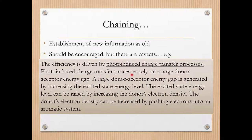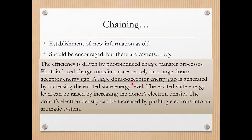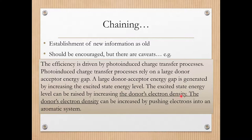And we can actually keep going on and doing this. 'Photo-induced charge transfer processes rely on a large donor-acceptor energy gap.' We can repeat 'a large donor-acceptor energy gap' as the subject of the following sentence: 'A large donor-acceptor energy gap is generated by increasing the excited state energy level.' And the excited state energy level in here can be raised by increasing the donor's electron density. Now we're going to put the object of this sentence into the subject part of the subsequent sentence: 'The donor's electron density can be increased by pushing electrons into an aromatic system.' So chaining moves the object of the prior sentence into the subject of the subsequent sentence — that is simply what chaining is.